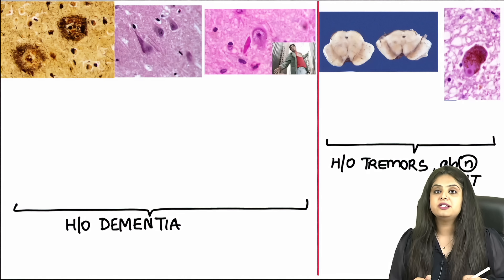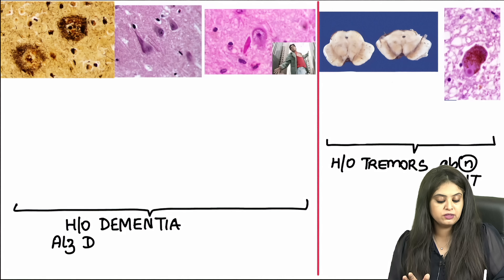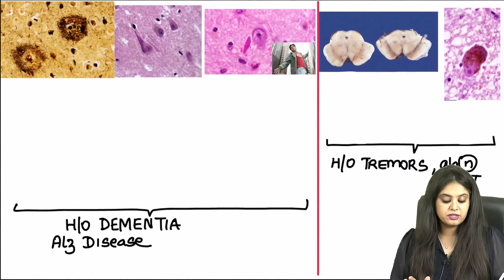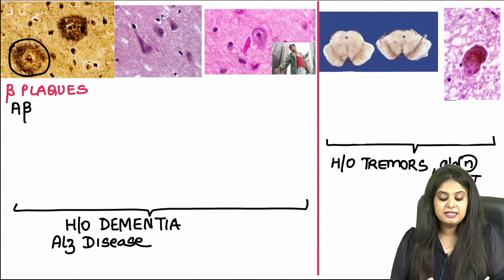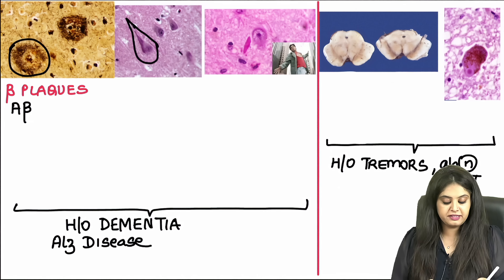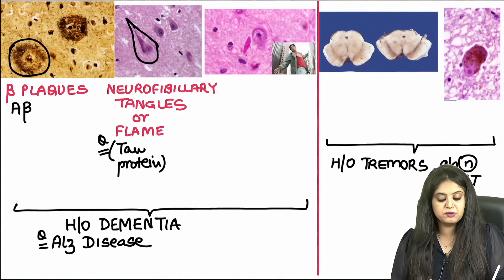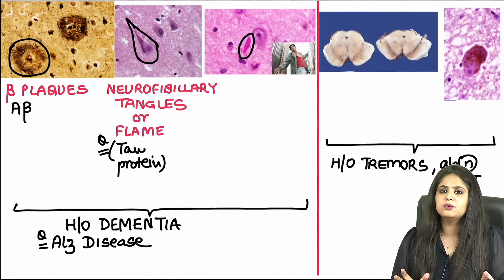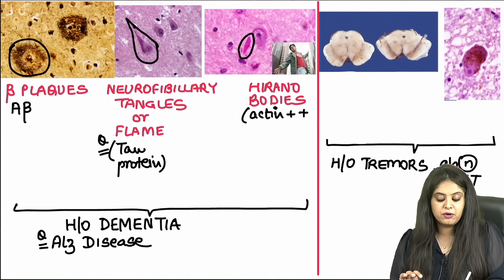The third topic covers brain disorders. A history of dementia always points to Alzheimer's disease. The first image shows beta plaques or neuritic plaques, made up of A-beta amyloid. Next are flame-like cells known as neurofibrillary tangles, made up of the classical tau protein — a very famous PYQ. The third image shows a needle-like structure called the Hirano body, which is made up of actin — remembered by the mnemonic of 'Hero doing acting.'